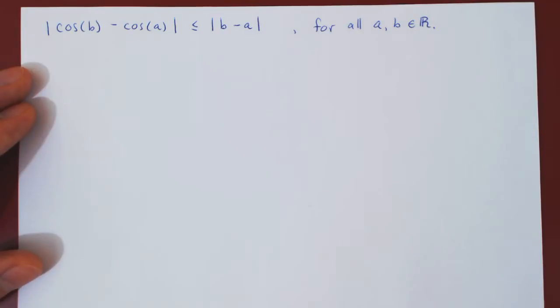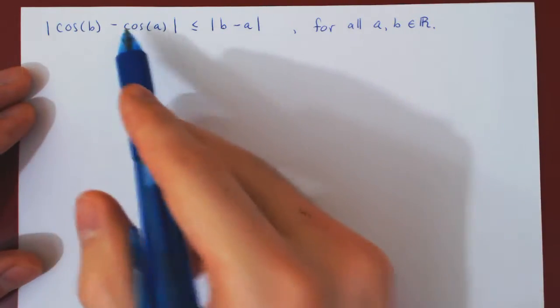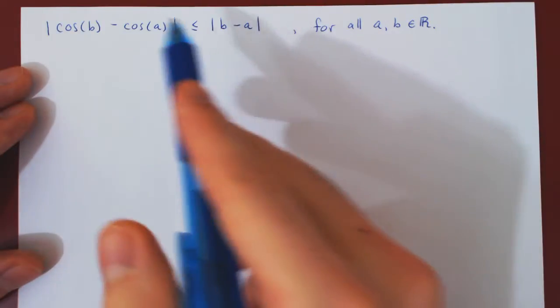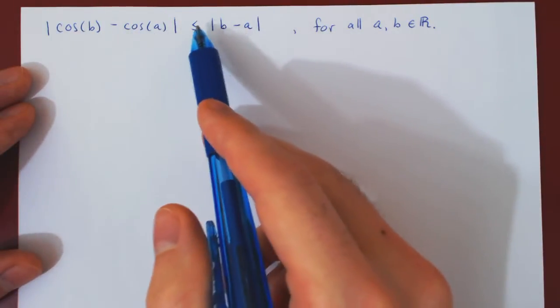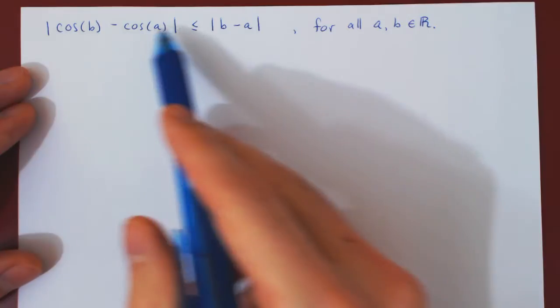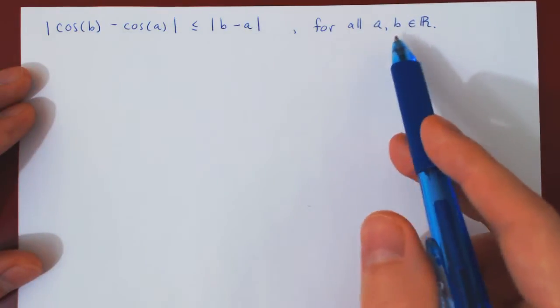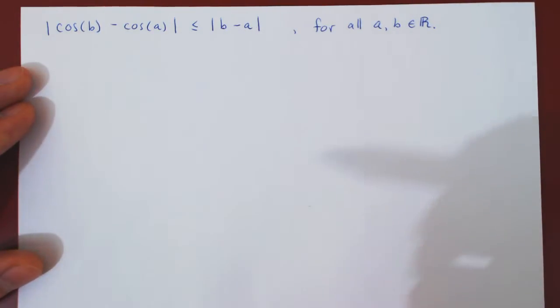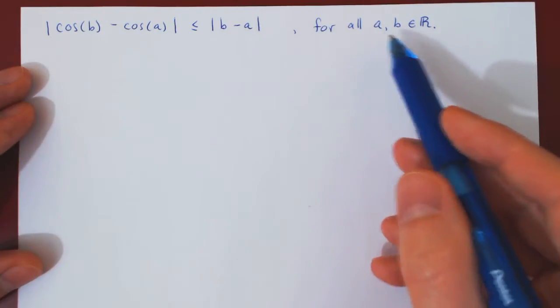Now notice that if a and b are equal, then both expressions are equal to zero, and obviously zero is less than or equal to zero. So the inequality is trivial if a and b are equal, so in our proof, we will be assuming implicitly that a and b are different.